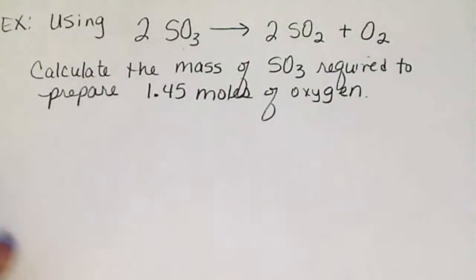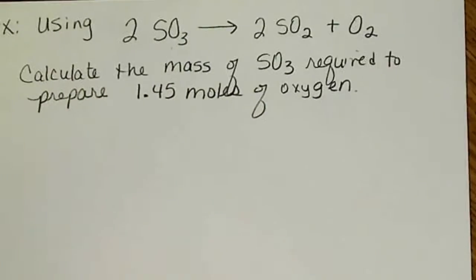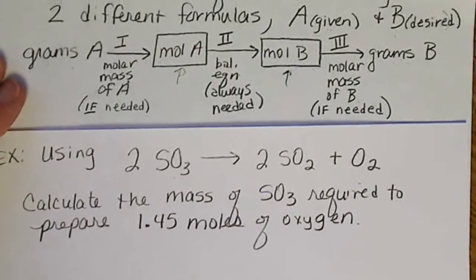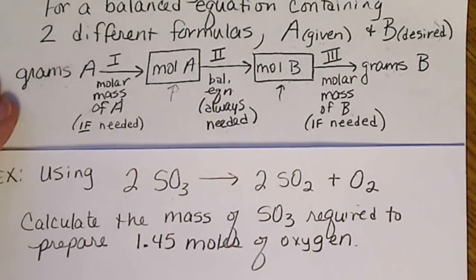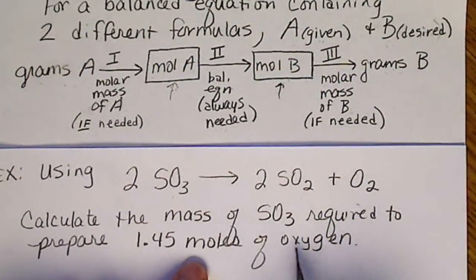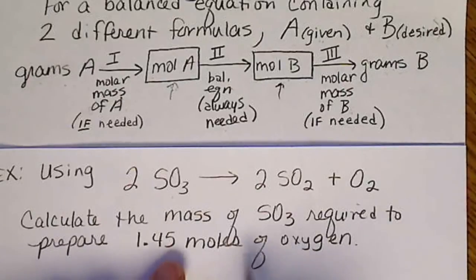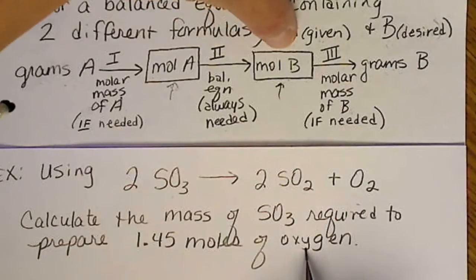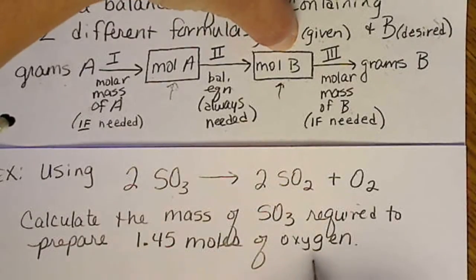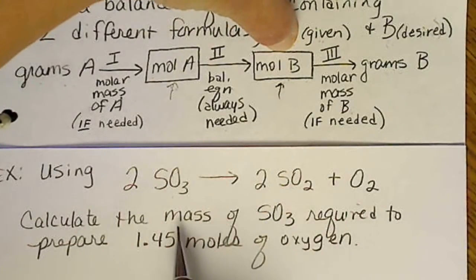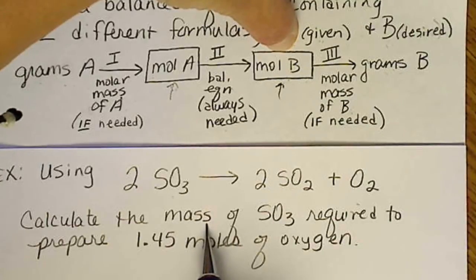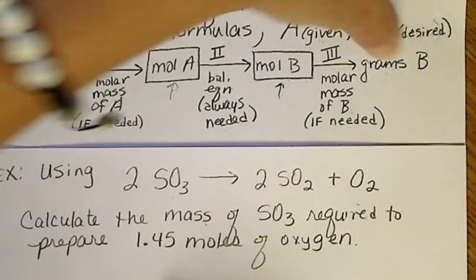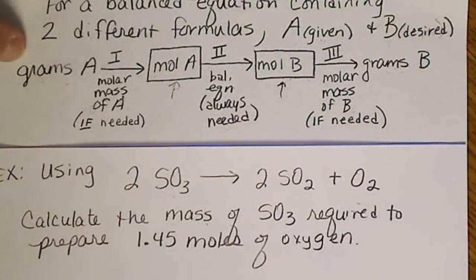So we're going to see what steps we're going to need along this math here. If we look at the stoichiometry math, we're given moles of A, so A would be oxygen. We're going to start here and go straight to the balanced equation to calculate moles of SO3. Since the problem is asking for mass, which would be grams of SO3, we're going to have to also do step 3.